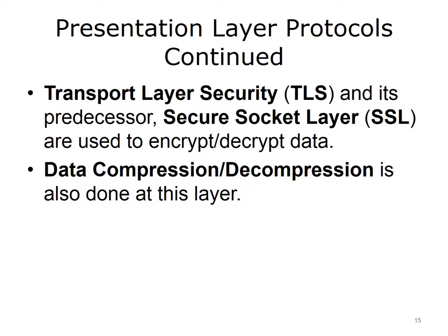Transport Layer Security, TLS, and its predecessor, Secure Socket Layer, SSL, are used to encrypt and decrypt data. SSL was developed by Netscape for their web browser and was improved upon, creating TLS. Today we use TLS, but people still refer to it as SSL. Encryption means that the data, or plain text, is encrypted using an algorithm and key to create ciphertext. Ciphertext cannot be read by anyone who intercepts the transmission. They would need to have the algorithm and key to decrypt the message so they could read it. When surfing the Internet, you can tell when you are using TLS when you see the HTTP in the address line replaced with HTTPS, and when you see a small padlock in the status bar at the bottom of the browser window, usually on the left-hand side.